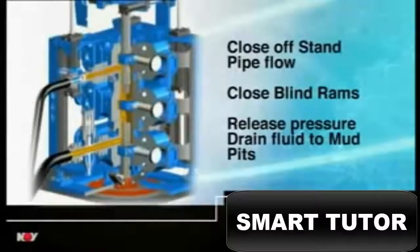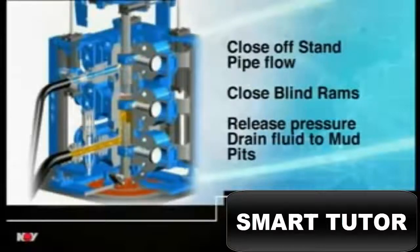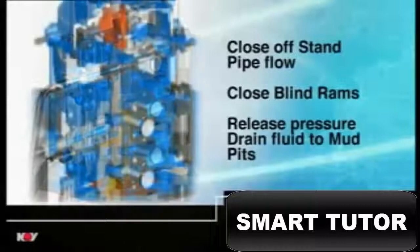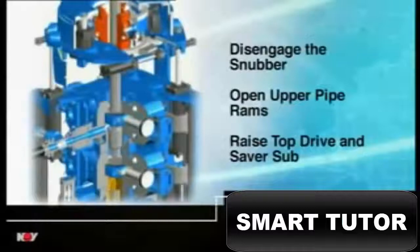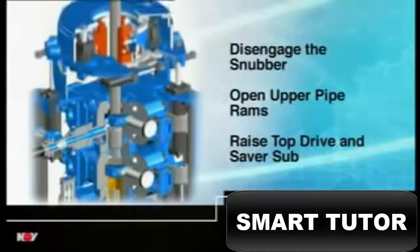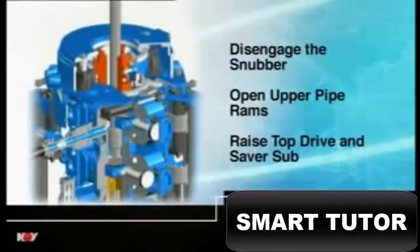The flow from the top drive is shut off and the blind rams closed, isolating the lower half of the pressure chamber. Pressurized fluid from the upper chamber is bled off into the mud pits. The snubber is disengaged, and the upper pipe rams opened, before the top drive connection tool is raised, by the top drive, to pick up the next stand of drill pipe.